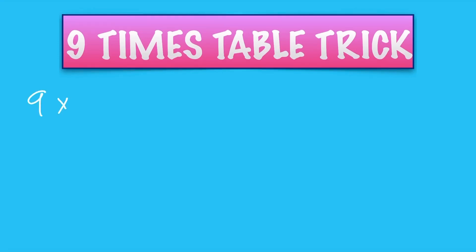9 times table trick. Let's say I want to do 9 times 6: take 1 away from 6 to get 5, and 5 and 4 make 9, so it's 54.